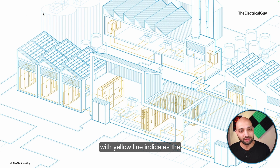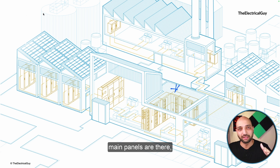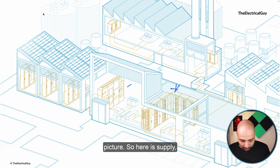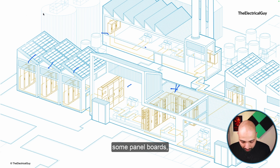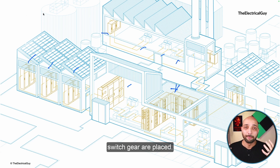Everything marked with yellow lines indicates the low voltage switchgear. The main room contains all the low voltage main panels — incomers, feeders — supplying all the buildings. This is an industry picture showing supply points, panel boards, and motor controls giving supply to different motors. This is how low voltage switchgear panels are placed in a real installation.